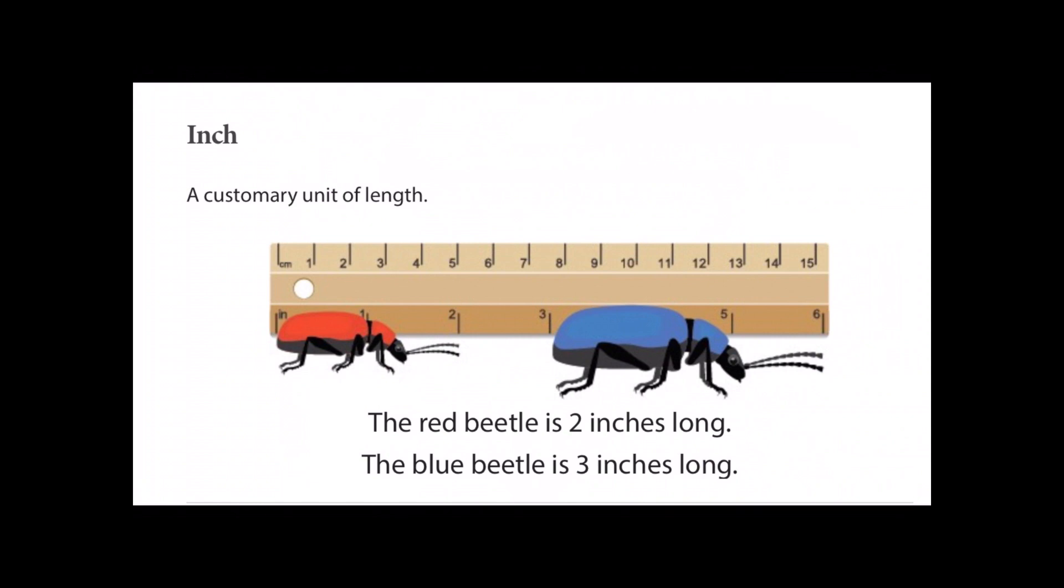From the back of the beetle at zero inches to the tip of its antenna at two. The blue beetle is three inches long, as the bottom of it starts at three, and the tip of it ends at six. So three, four, five, six. That is three inches long.